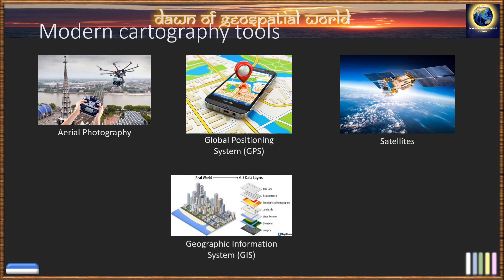And at last comes GIS — Geographic Information System. Through GIS mapping, we can transform geographical data into digital maps that help the user to easily understand trends and patterns.